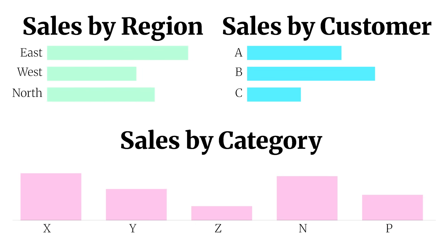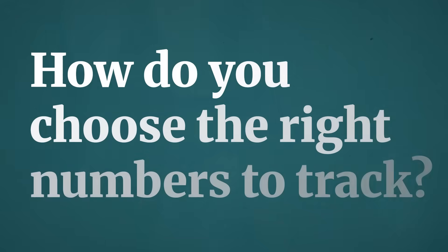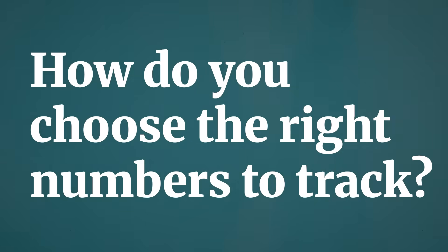You can have sales by region, sales by customer, sales by this and that, all filled up nicely on the canvas and call it a dashboard. Or you can take a genuine effort to find out what are the right metrics and calculations to track to actually improve the performance of the business. In step one we laid out the problem; in this step — which is super important and I haven't seen enough people talk about — it's how do you come up with the right numbers to track.